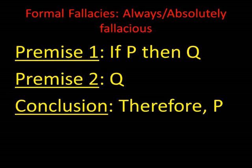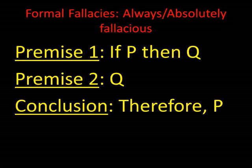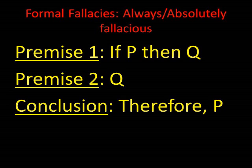Formal fallacies, on the other hand — you see one on the screen here — are always and absolutely fallacious. It doesn't matter what content you put in; the context and content don't matter. You can tell by the form alone that it's deductively invalid, fallacious. For example, affirming the consequent, which you see on the screen, is always invalid, no matter what we put in for P or Q.